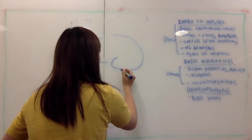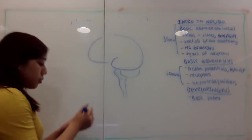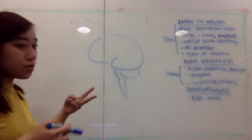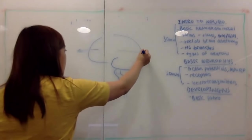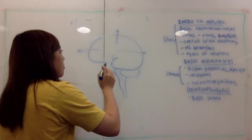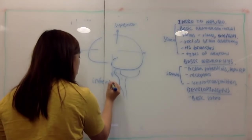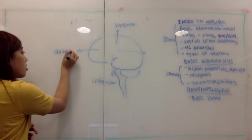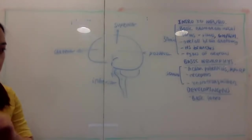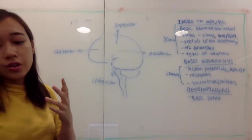For orientation in neuroscience, we have directional terms. You have superior and inferior, and also anterior — towards the front of your head — and posterior, towards the back. The reason we can't only use these two axes is because the brain actually curves around quite a bit.